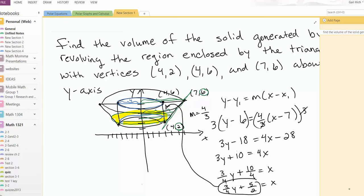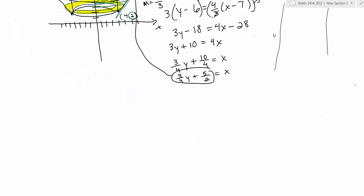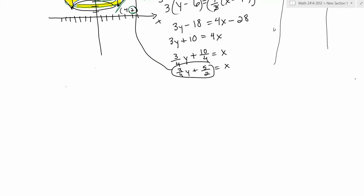So the green length is described in terms of y as 3 fourths y plus 5 halves. That's how far you went. So the integral then is going to integrate from along the y, so from the y-coordinate of 2 to the y-coordinate of 6, our outer radius, which was the green one, so that's the 3 fourths y plus 5 halves squared minus the inner radius, which was always the same. It was that column which had a length of 4. So it's going to be minus 4 squared dy.